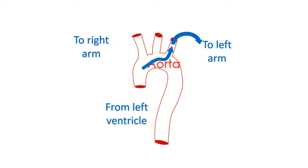Blood vessels to both arms arise from the largest blood vessel in the body supplying oxygenated blood, known as the aorta. The origin of the blood vessel to the right arm is in line with the initial part of the aorta. It is presumed that the force of ejection of the left ventricle is conveyed more to the right arm blood vessel for this reason.